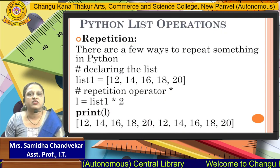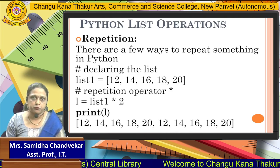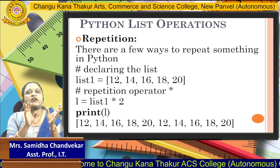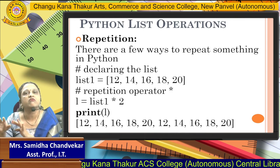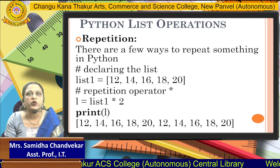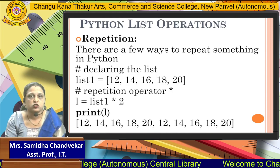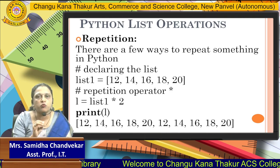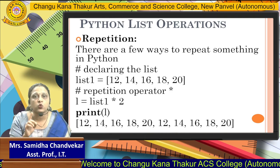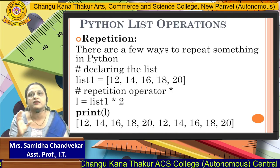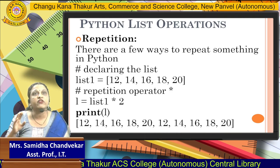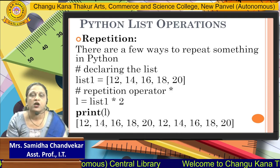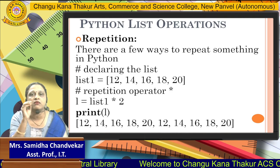Now we have to start with some operations on the Python list. The first operation is repetition. What is meant by repetition? Repetition means you want to repeat the same part twice. You want to declare things using repetition. So, declaring the list — obviously you are creating a list: list1 = [12, 14, 16, 18, 20]. These are the elements in our list, and we want to repeat them twice. So we have to use the repetition operator, that is the asterisk operator — list1 into 2.